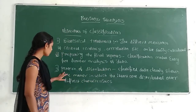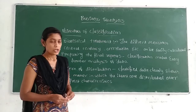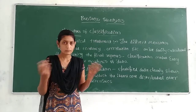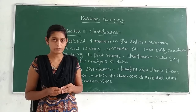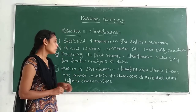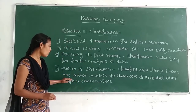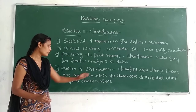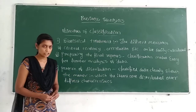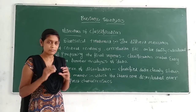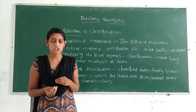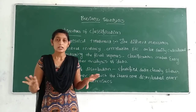The next objective is pattern of distribution. The classification of data clearly shows the manner in which the items are distributed over different characteristics. On the basis of classified data, we can understand how the data are distributed.